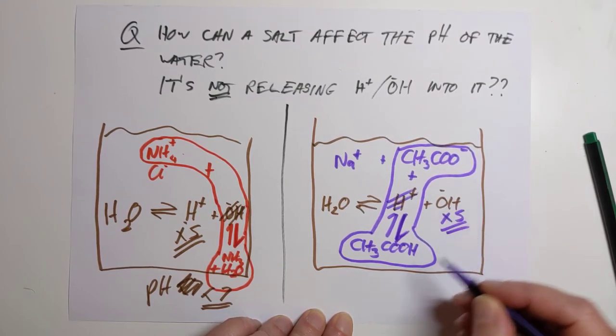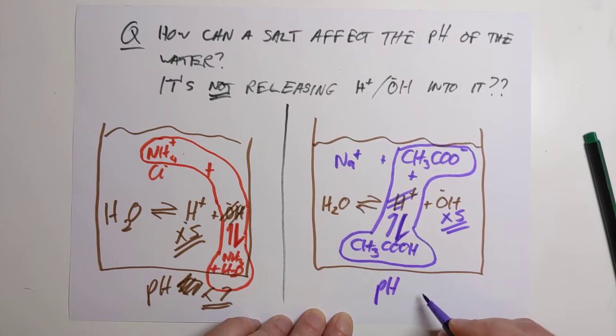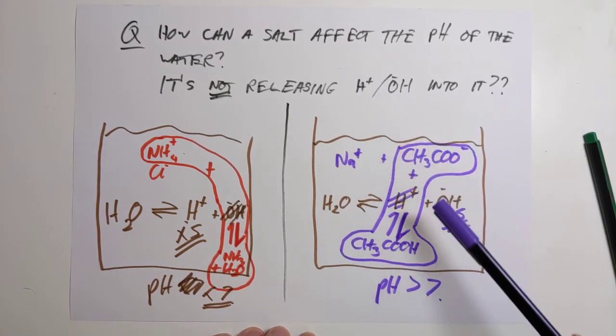And it will drift and produce more hydroxide. And so you'll get an excess of hydroxide. And the pH of this beaker will now be greater than 7.